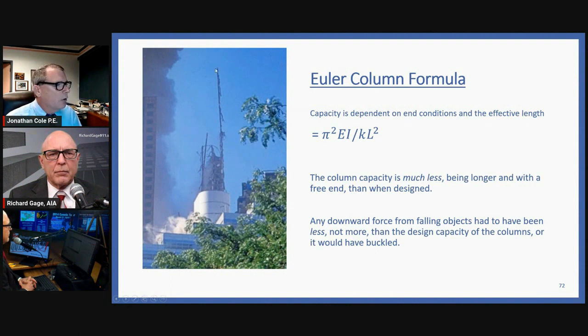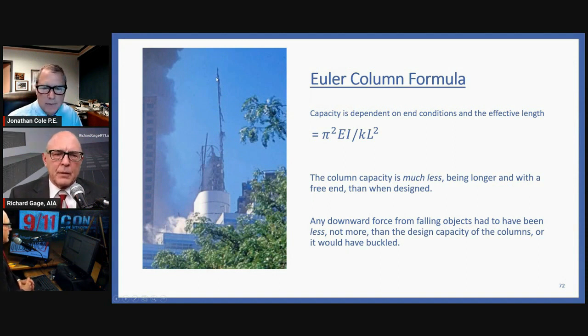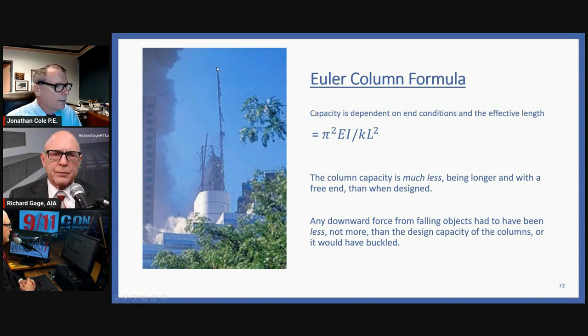Well, I can tell you when you have a long, free column like that, that's much longer, that the capacity, the downward load on that column is much less and not more than its original design strength because it was designed to be connected all through here. So any downward force from a falling top block or a pancake floor had to be less, had to be imposed less on this column and not more than its design strength, or we would have seen this thing buckled.